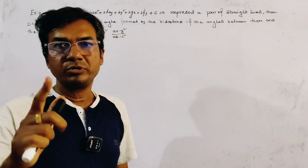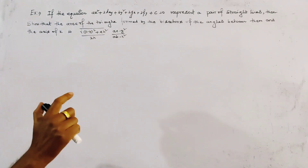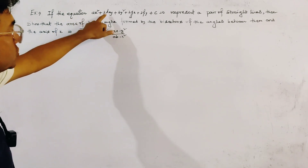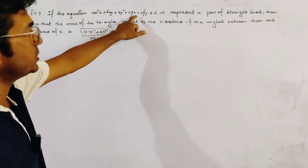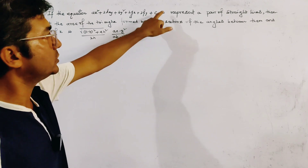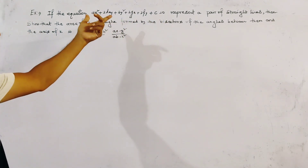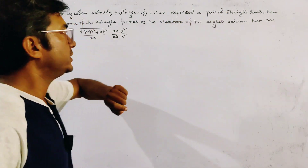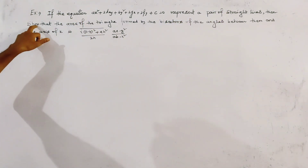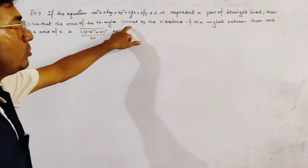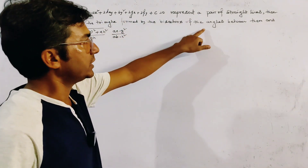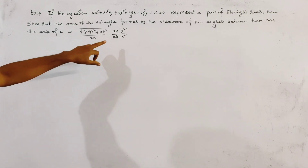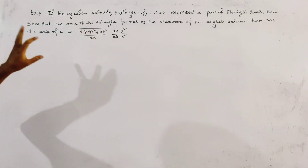Today's problem is from pair of straight lines. If the equation ax² + 2hxy + by² + 2gx + 2fy + c = 0 — which we know is the general equation of a conic — represents a pair of straight lines, then show that the area of the triangle formed by the bisectors of the angle between them and the x-axis is given by a specific formula.